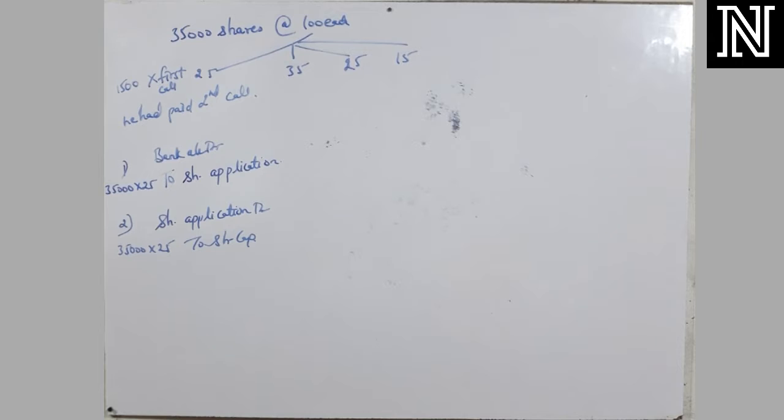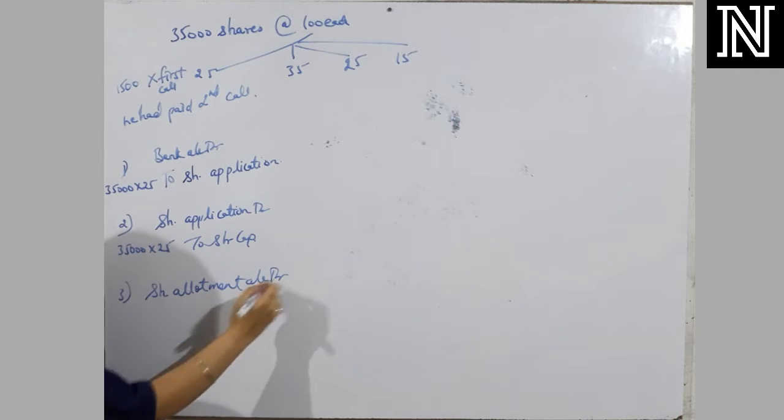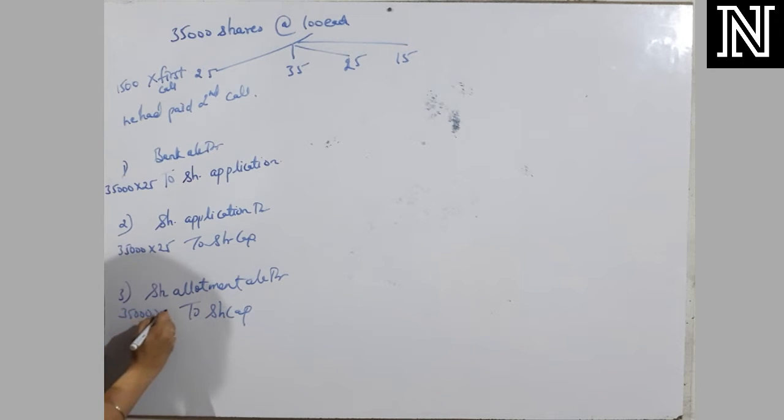The next entry, what is the third entry? Share allotment account debit to share capital. And what amount will be going to be? 35,000 into 35. Is it okay? Is it clear to everyone?